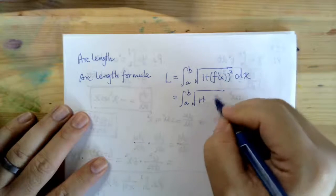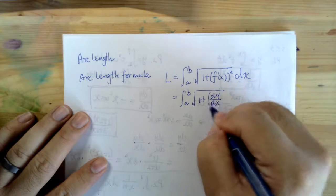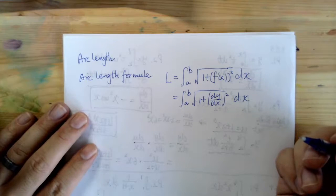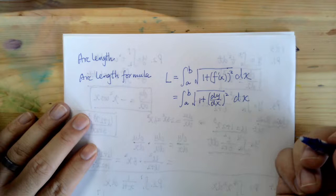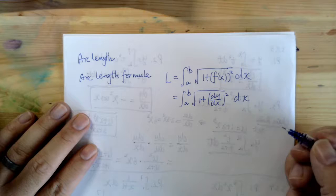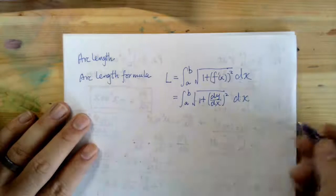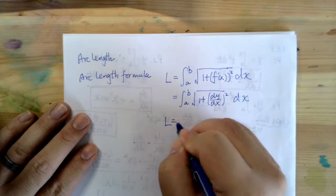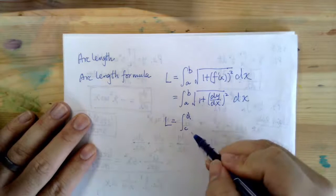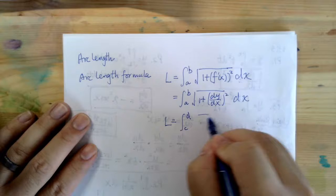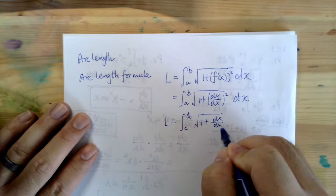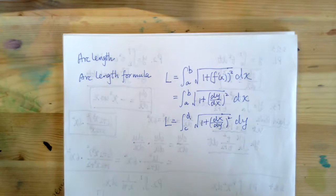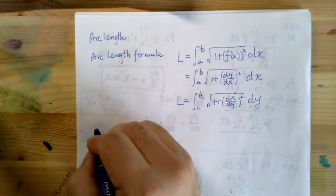You can rewrite it as the integral of the square root of 1 plus (dy/dx) squared, dx. Sometimes, if the curve is given in terms of y, you can use the alternate form: the integral from c to d of the square root of 1 plus (dx/dy) squared, dy.